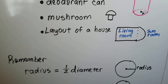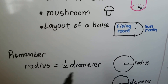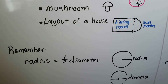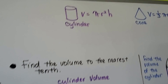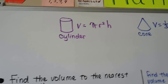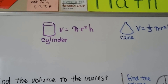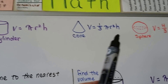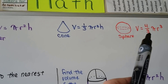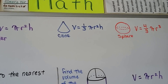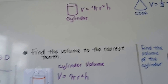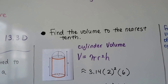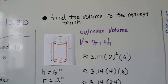Remember that radius is half of a diameter — that'll help you. We have our Cylinder Volume Formula, we have our Cone Volume Formula, and our Sphere Volume Formula. We're going to use these to find the volume of a cylinder with a hemisphere dome.